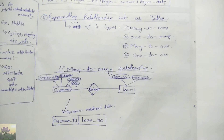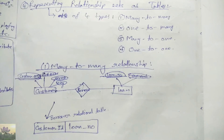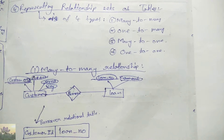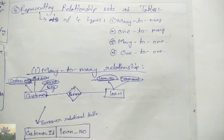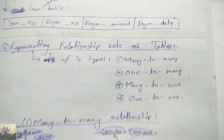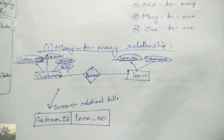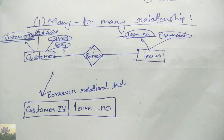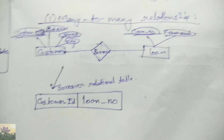This forms the loan relationship table. Coming to the fourth type — representation of relationship sets as tables — which is mainly of four types: many-to-many, one-to-many, many-to-one, and one-to-one. Starting with the many-to-many relationship, the customer ID and loan number are the two key attributes of the two entity sets — customer and loan — and are simply considered together to form the borrower relationship table.